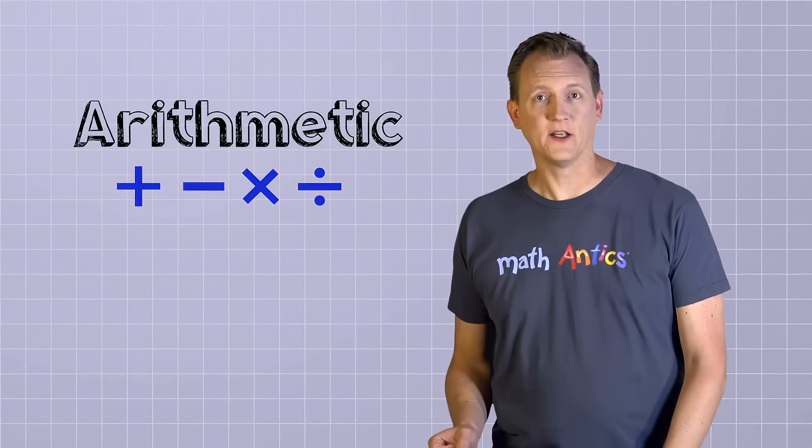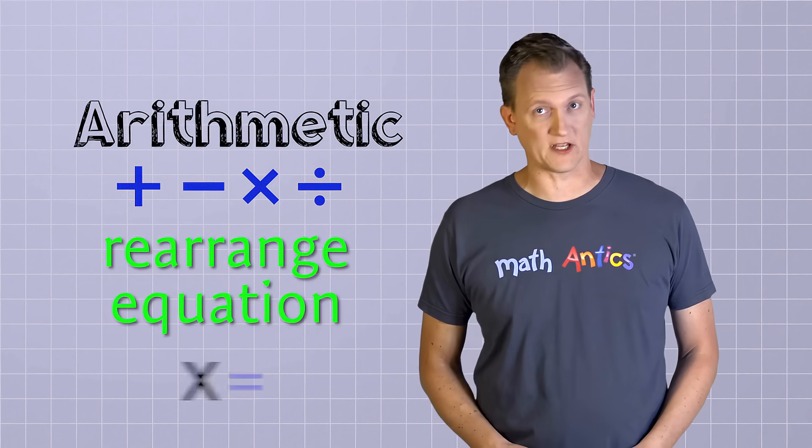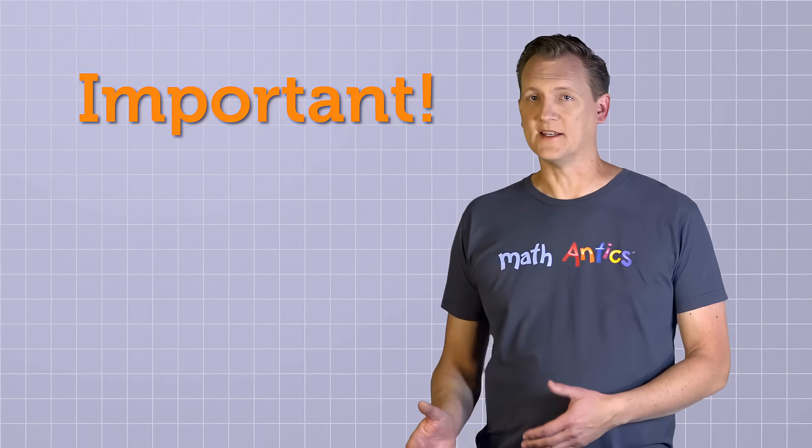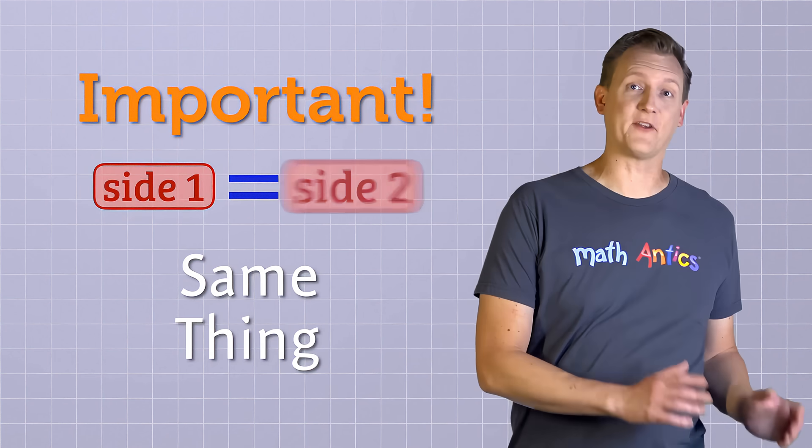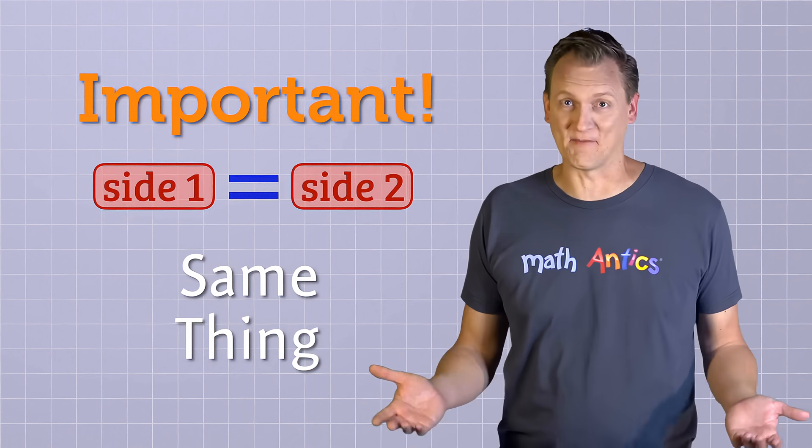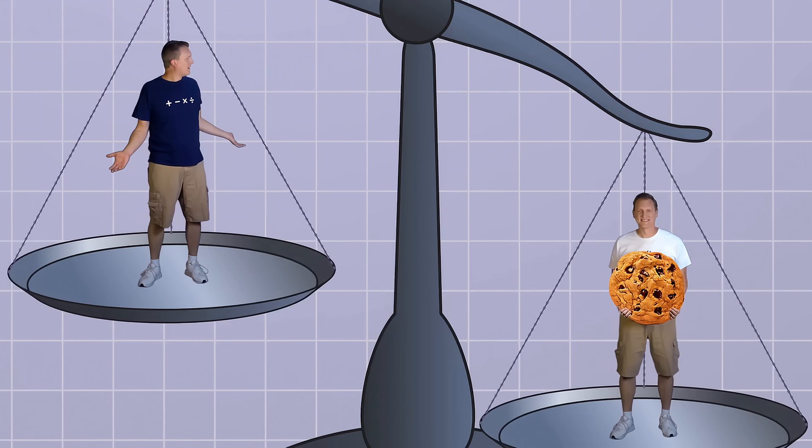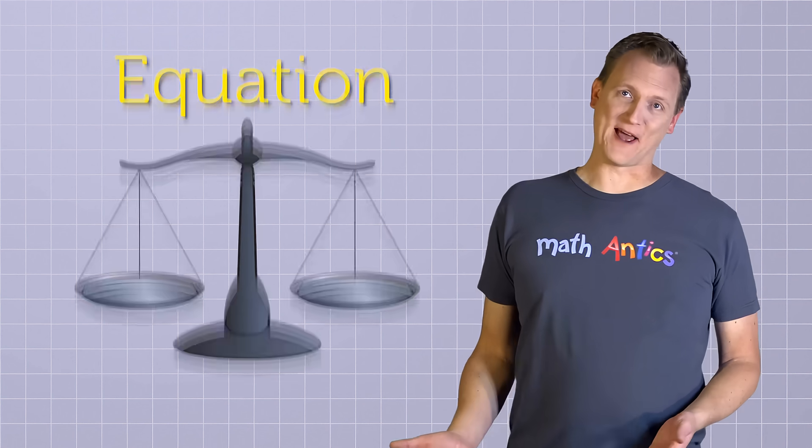Now before we see some examples, do you remember the key strategy for solving an equation with an unknown value in it? We have to use arithmetic to rearrange the equation so that the unknown is all by itself on one side of the equal sign. And the most important thing to keep in mind while rearranging equations is that whenever we do something to one side of an equation, we have to do the same thing to the other side, or else the other side might get jealous. Hey, how come he got a cookie and I didn't? Actually, it's to keep the equation in balance.